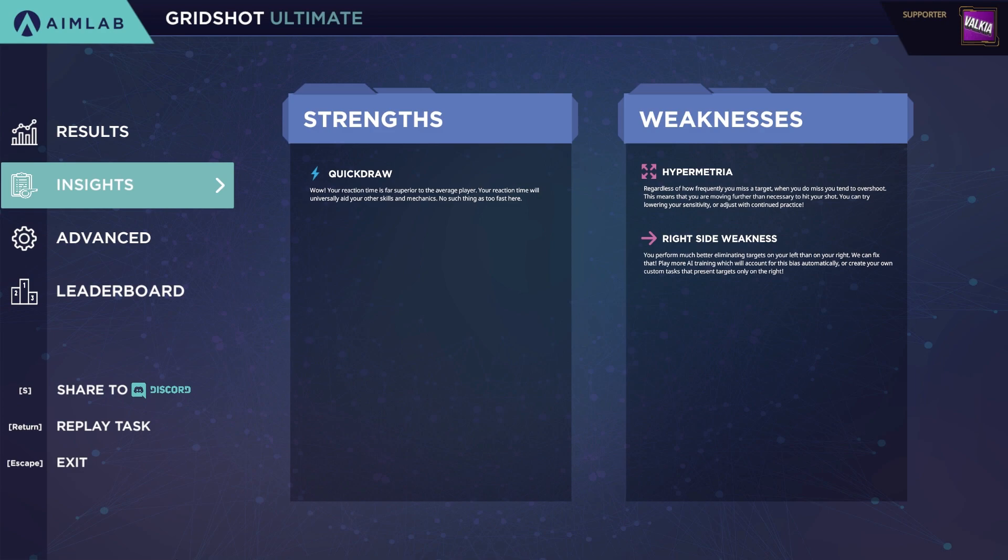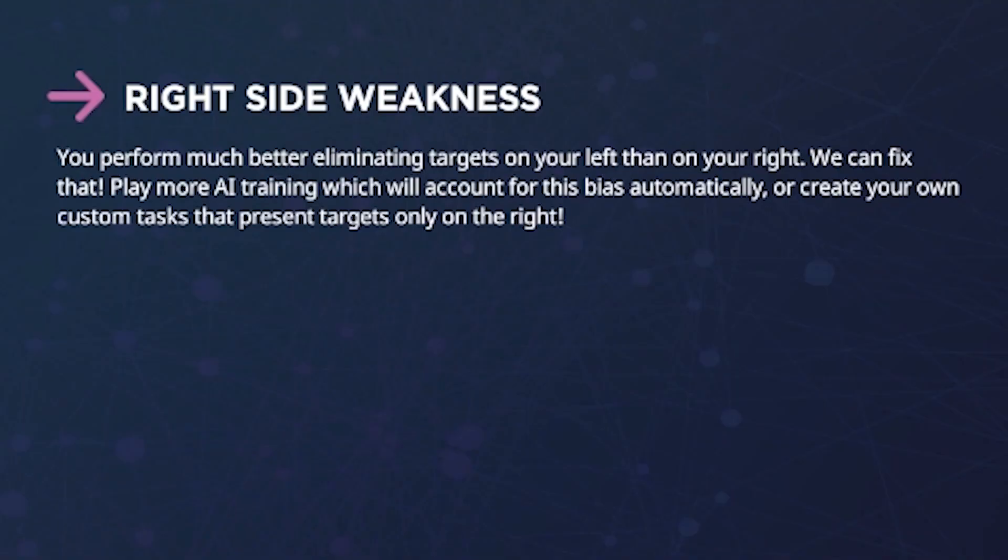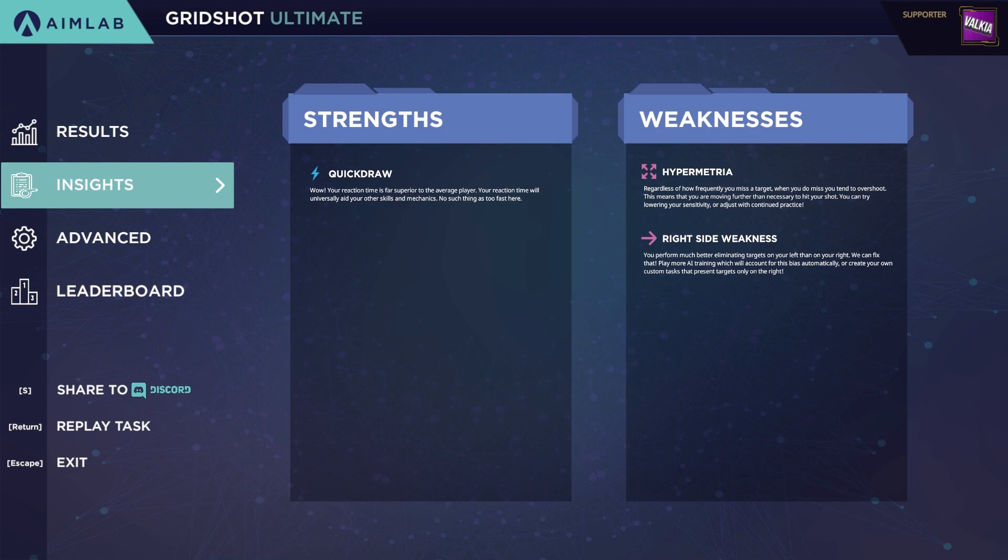The second tab after results is your insights. Insights provide feedback on your performance split into strengths and weaknesses during the task run. Each strength or weakness will include a description to help you better understand what they mean. For example, here we have right side weakness, which means that I need to improve my performance on the right side of the screen. Now that AimLab has identified my weakness, I can create a task with targets spawning on the right side of the screen and practice to turn my weakness into a strength.